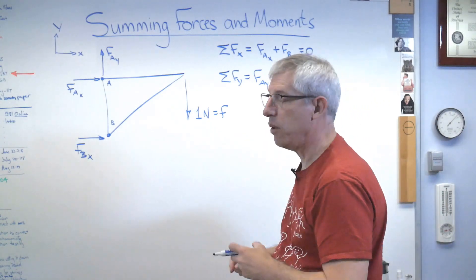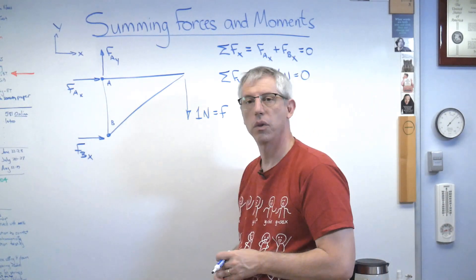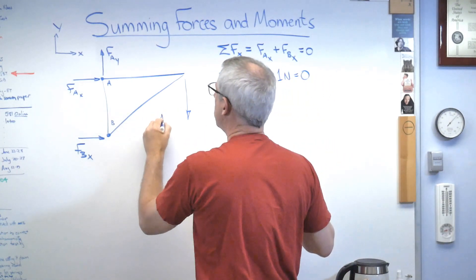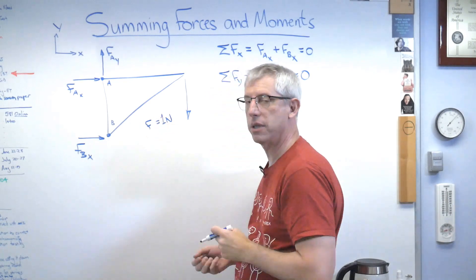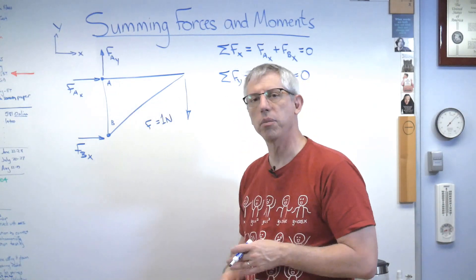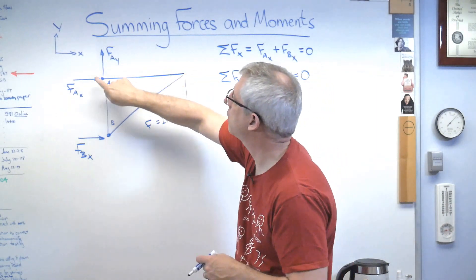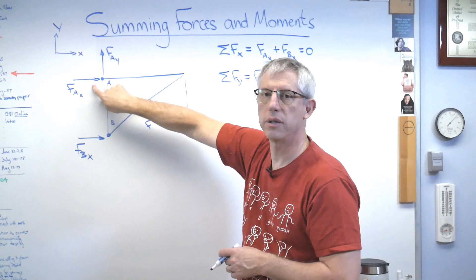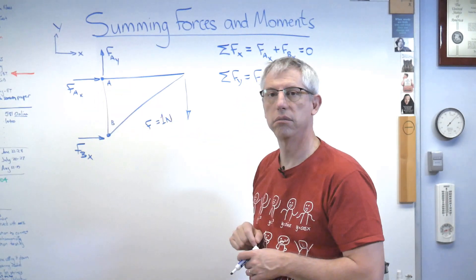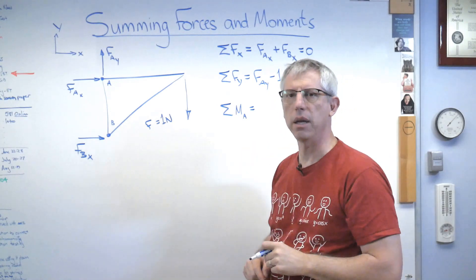I need one more equation — I have three unknowns so I need three equations, which means I have to sum moments somewhere. I can sum moments about any point I want, and this is where you can use a little judgment to simplify the problem. It'll work no matter what as long as you execute correctly, but picking the right point makes things easier. If I sum moments about point A, then FAx and FAy both have zero moment arms — they act right through that point — so I only have to deal with FBx and the applied load.